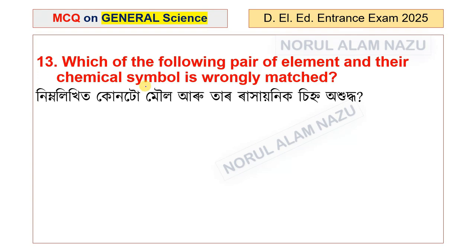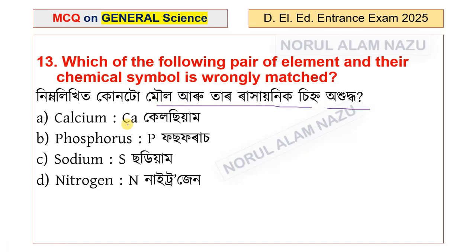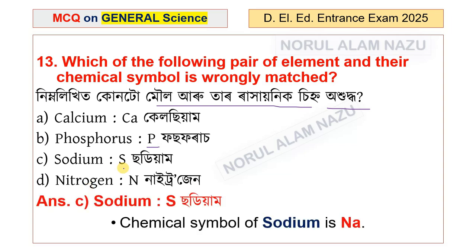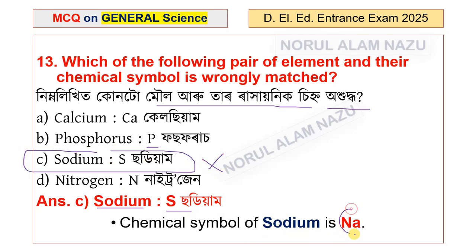Which of the following pairs of elements and their chemical symbols is wrong? Calcium — Ca, phosphorus — P, sodium — S, nitrogen — N. The answer is option C. Sodium's correct chemical symbol is Na, not S.